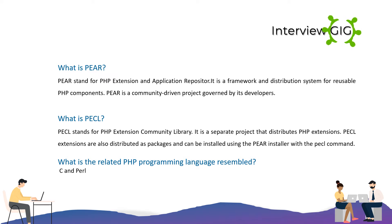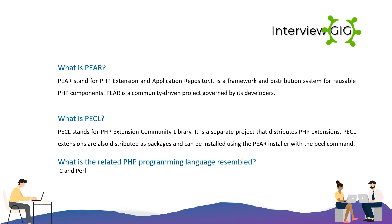What is PEAR? PEAR stands for PHP Extension and Application Repository. It is a framework and distribution system for reusable PHP components, and is a community-driven project governed by its developers. PEAR also stands for PHP Extension Community Library — a separate project that distributes PHP extensions as packages, installable using the PEAR installer with the PEAR command.